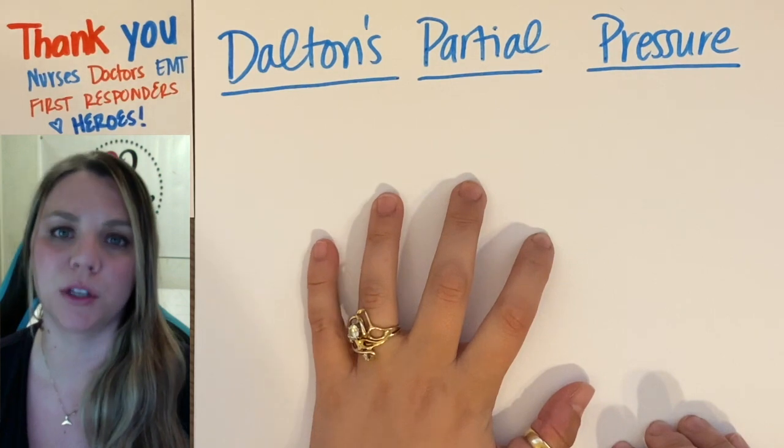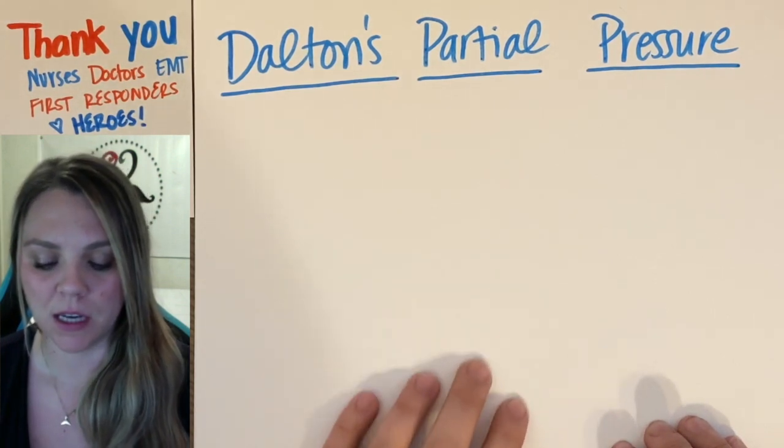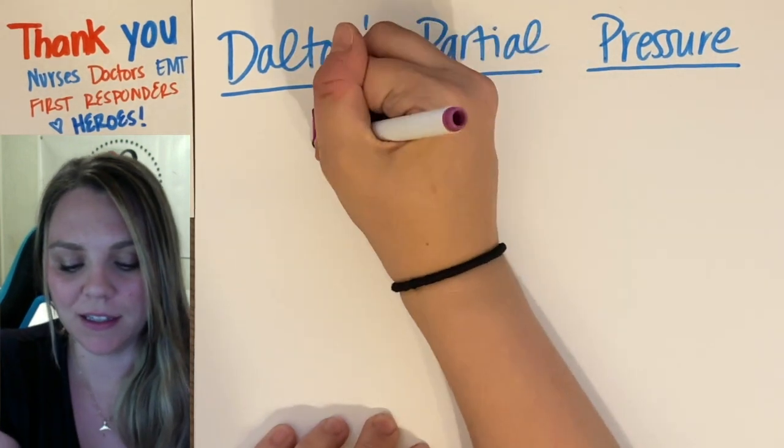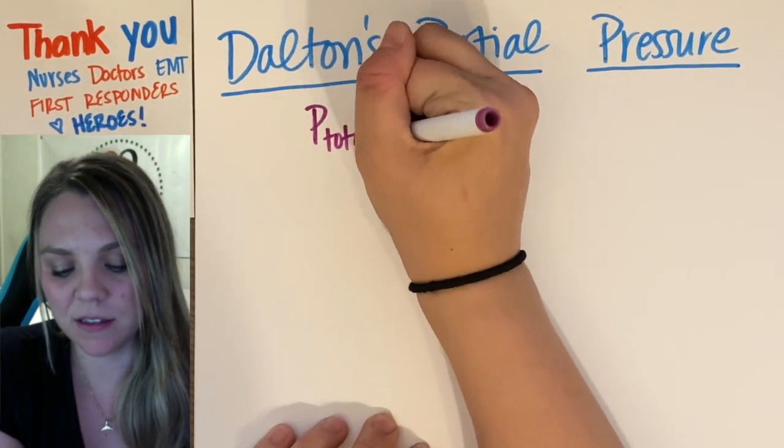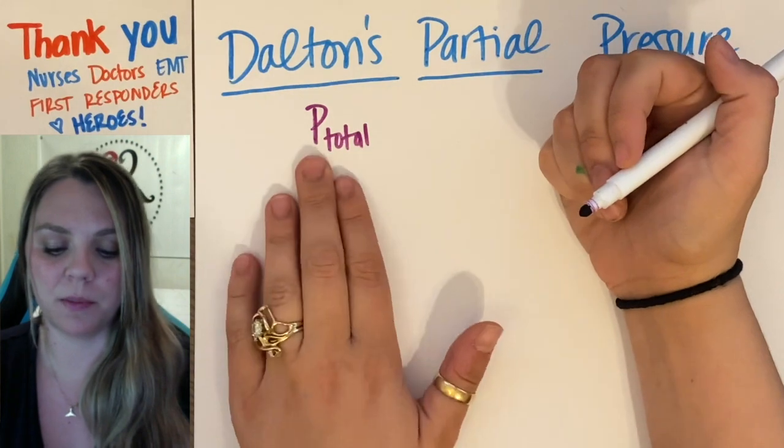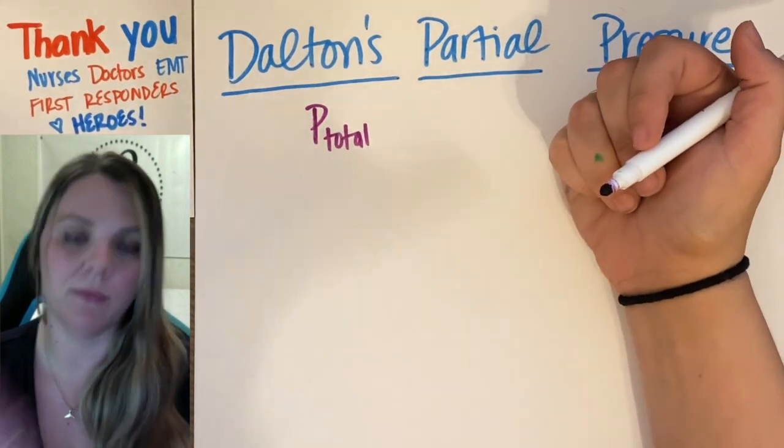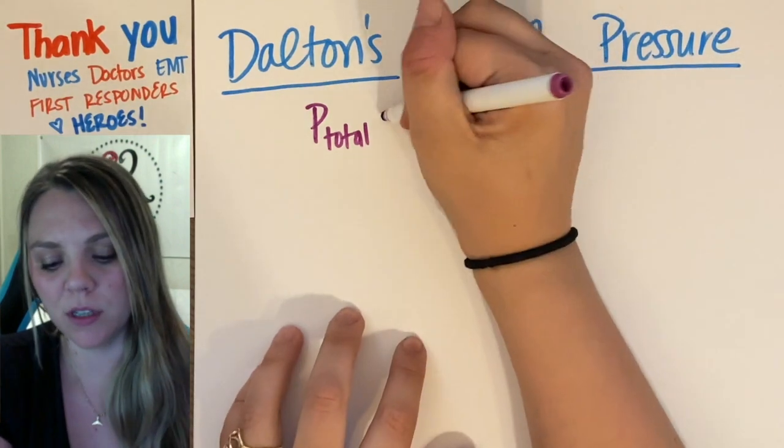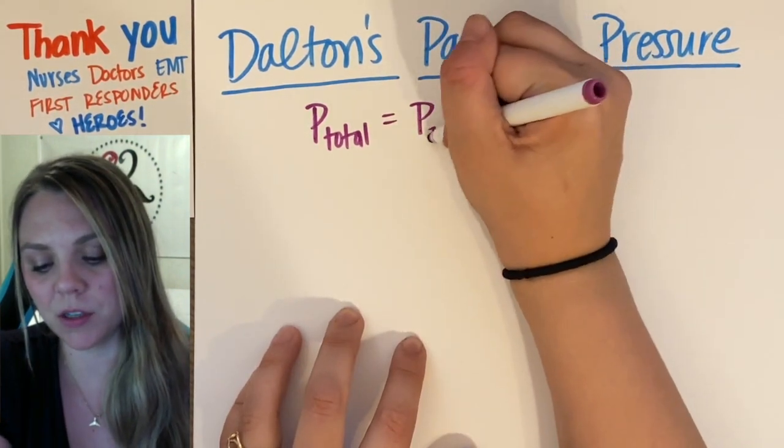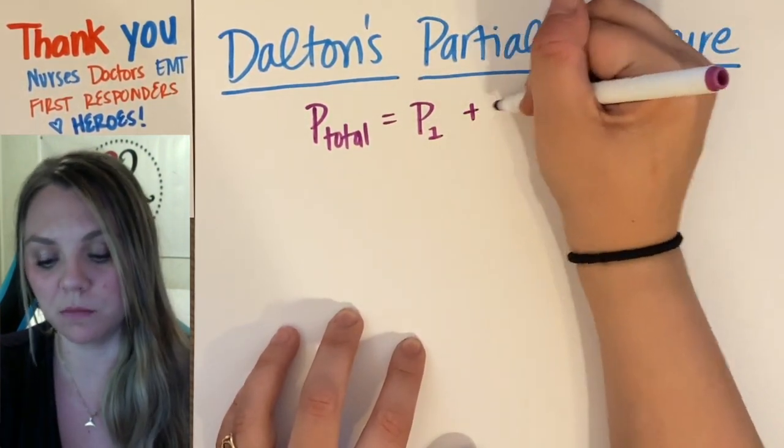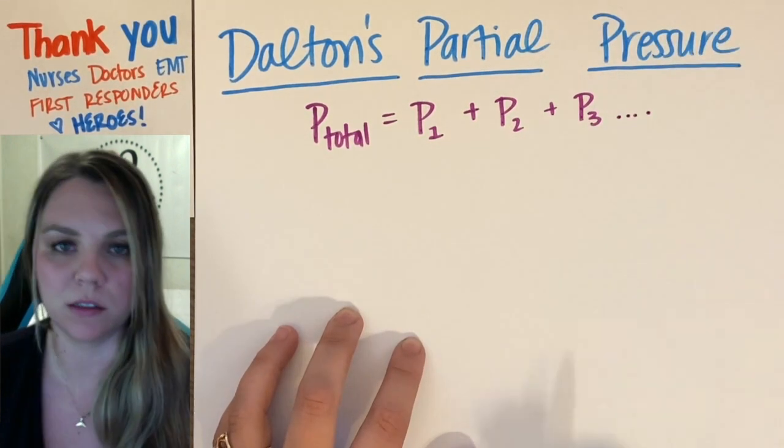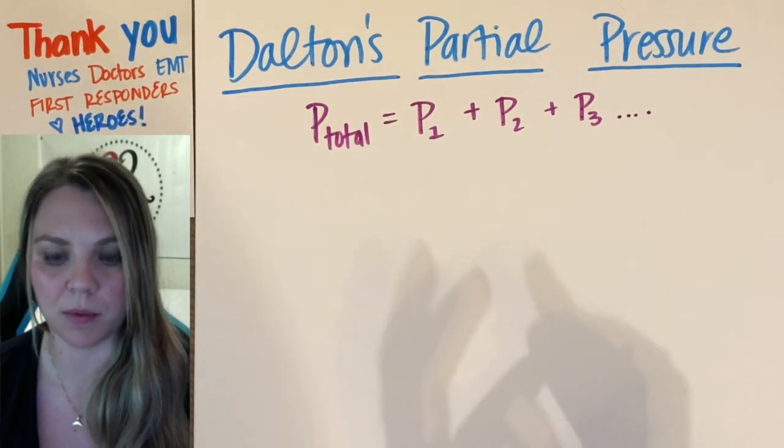Dalton's Law of Partial Pressures is actually really easy and it has to do with gases. Basically, he says that the P total, the pressure of my total container, my total system, is going to be the pressure of my first substance plus the pressure of my second substance plus the pressure of my third gas, et cetera. You just add them all up.